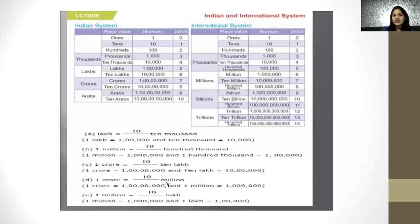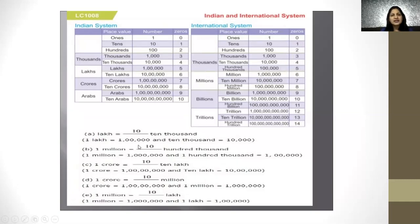Now let us relate both the Indian system and the International system of numeration by counting zeros. Hundreds has 2 zeros. 10,000 has 4 zeros. A lakh has 5 zeros. A crore has 7 zeros. A million has 6 zeros. A billion has 9 zeros. So let us relate both systems.